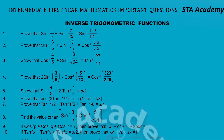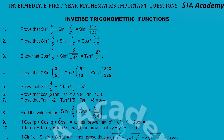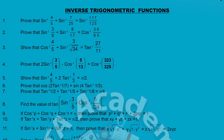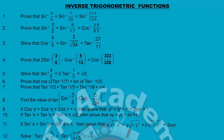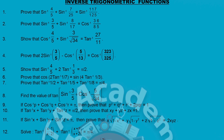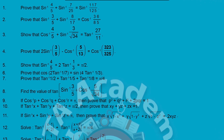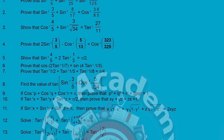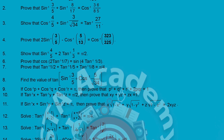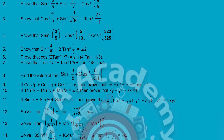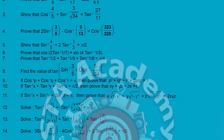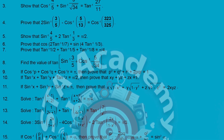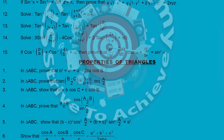For Inverse Trigonometry I have mentioned 15 SAQs — very important SAQs. Practice each and every one, as they are very helpful to get maximum marks in your board exam. The first one: prove that sin⁻¹(4/5) + sin⁻¹(7/25) = sin⁻¹(117/125). The same method is applicable for questions 1 through 5. If you are able to solve the first one up to five, you can easily solve all these questions.